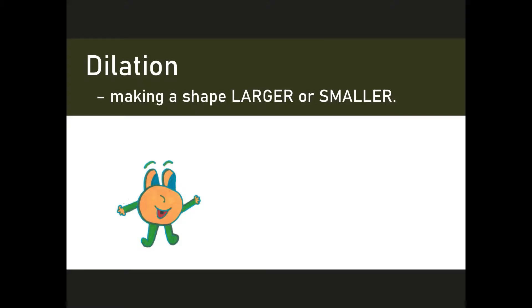Now, I want to show you a short little animation. It is nothing great at all — I made it and I'm not a very good artist. But Betty Jo is my main character. And when you watch this animation, I want you to see if you can identify the translation, rotation, reflection, and dilation. All right, let's go and watch.